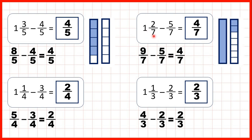Then, we had 1 and 2 sevenths, but we needed to take 5 sevenths away. So instead of 1 and 2 sevenths, we thought of that as being 9 sevenths.